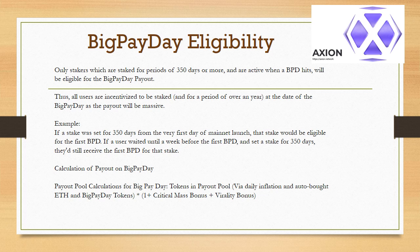Big Pay Day eligibility: only stakers which are staked for periods of 350 days or more, and are active when a BPD hits, will be eligible for the Big Pay Day payout. Thus, all users are incentivized to be staked for a period of over a year at the date of their Big Pay Day, as the payout will be massive. Example: if a stake was set for 350 days from the very first day of Mainnet launch, that stake would be eligible for the first BPD. If a user waited until a week before the first BPD and set a stake for 350 days, they'd still receive the first BPD for that stake.